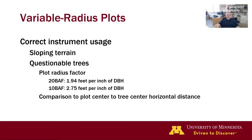For example, if using a 20 BAF instrument, a 10-inch DBH tree can be 19.4 feet from plot center and still be tallied — 10 times 1.94. The measured distance to compare to is horizontal distance, plot center to tree center.